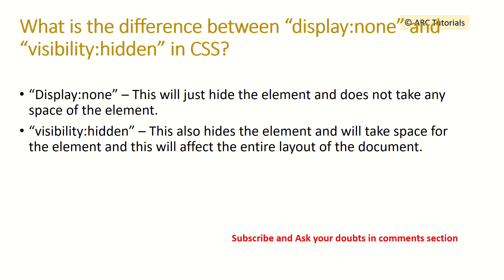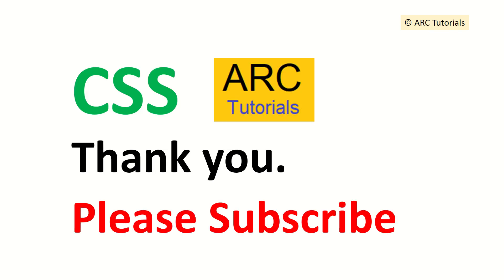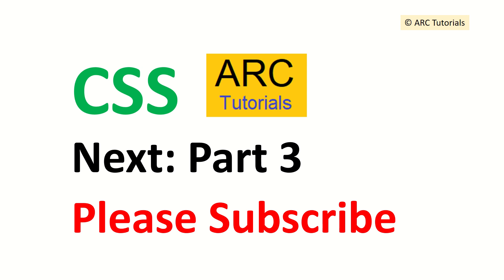What is the difference between 'display: none' and 'visibility: hidden'? When we write 'display: none', it hides the element on the page and it does not take up any space. Whereas 'visibility: hidden' hides the element but it still takes up the element's space. That's why we always prefer to use 'display: none' in most cases.